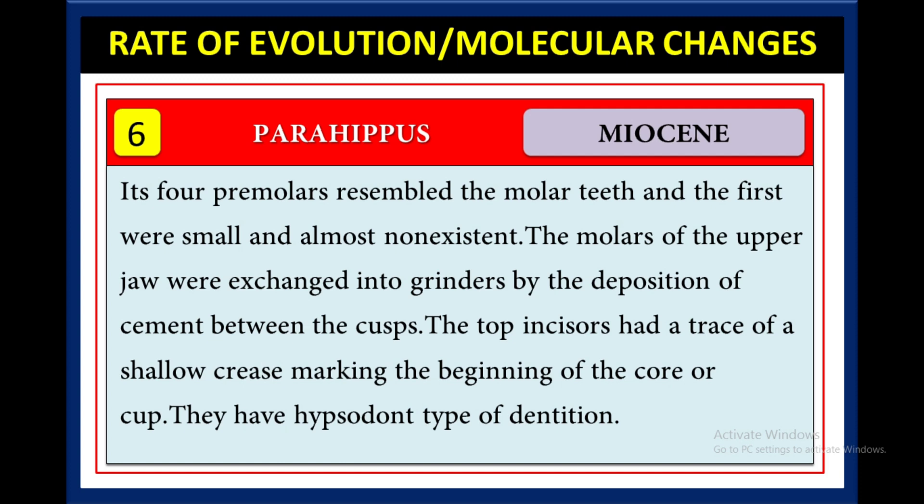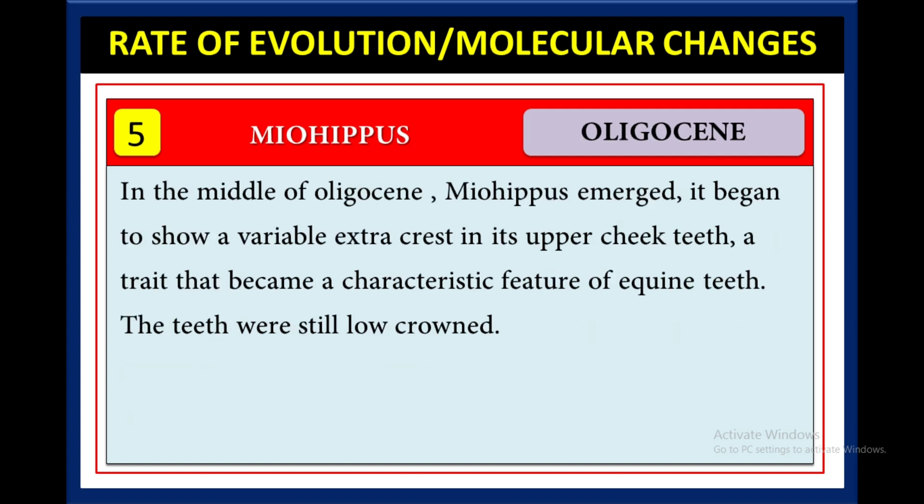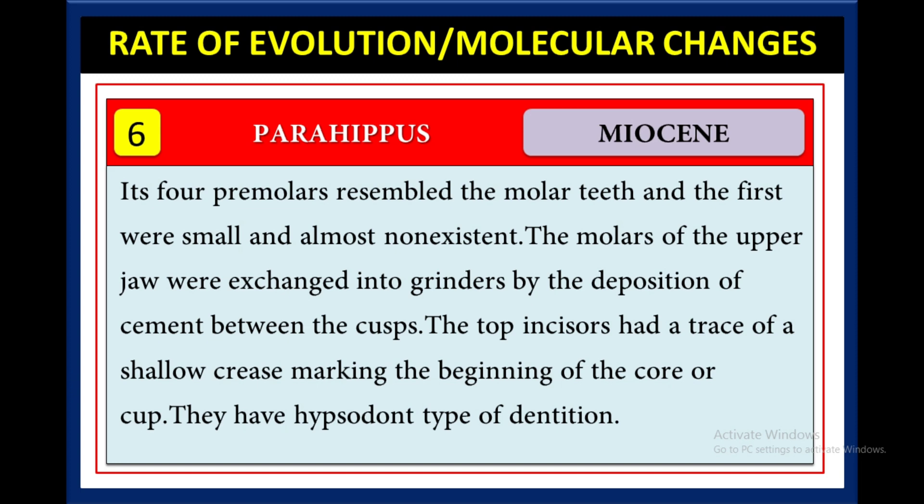Now in the Miocene period, Parahippus came. Its four premolars resembled the molar teeth, and the first were small and almost non-existent. The molars of the upper jaw were changed into grinders by the deposition of cement between the cusps. The top incisors had a trace of a shallow crease, marking the beginning of the core or cup. They had a hypsodont type of dentition.